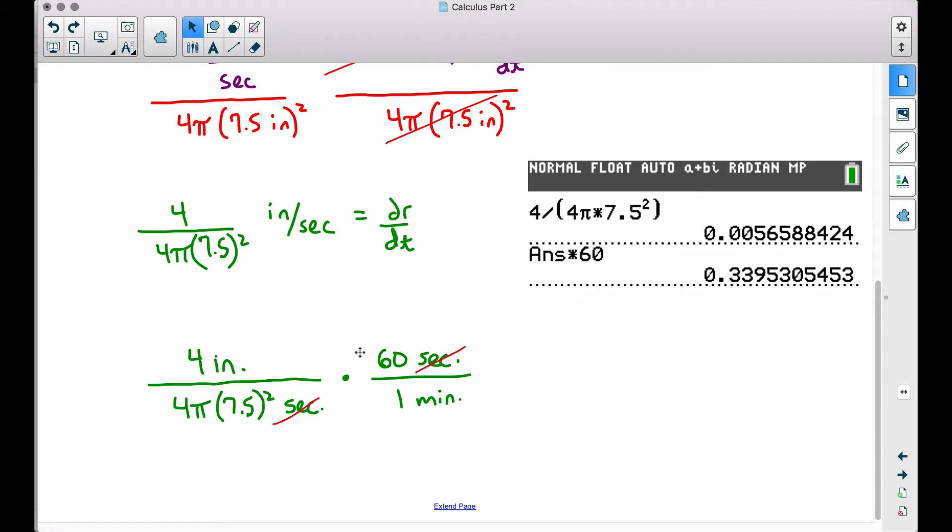So in all honesty, all we're really doing here is just multiplying that answer we got before, multiplying it by 60. This will be our answer.